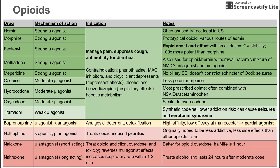Next on this list is morphine. Morphine is another strong mu agonist and the prototypical opioid. It's commonly used and has various routes of administration — it can be IV or oral. Morphine is a very strong drug.